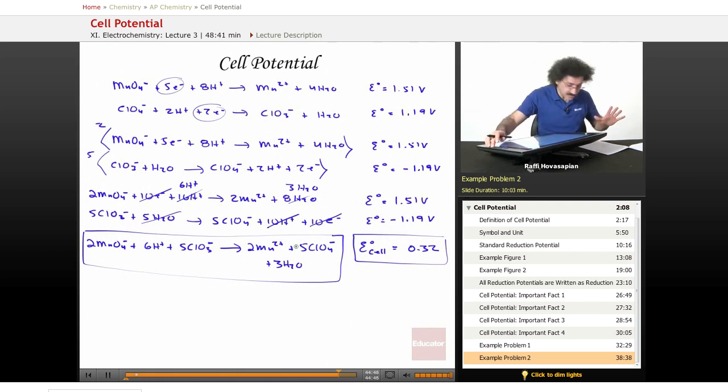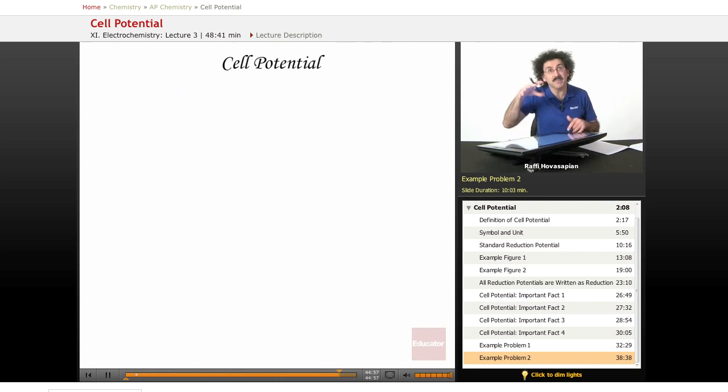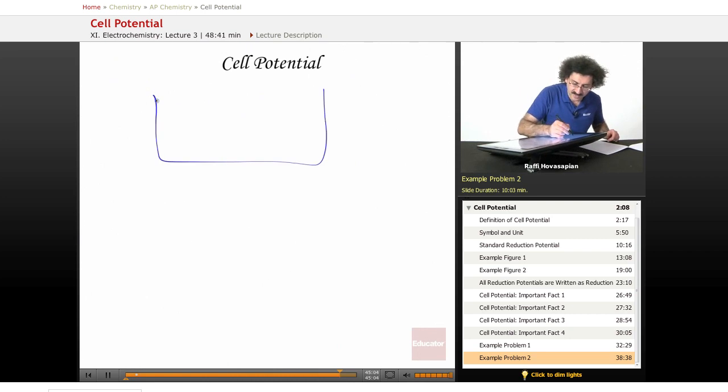Now, notice all of these species. That's an ion. That's an ion. That's an ion. And that's an ion. So when I actually draw out the physical arrangement for this thing, here is what it looks like. The cell itself is going to look like this. I'm going to have my digital voltmeter. And because they're both ions...